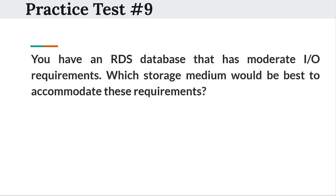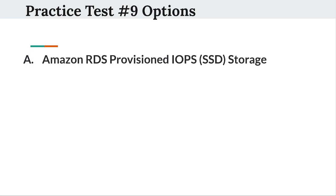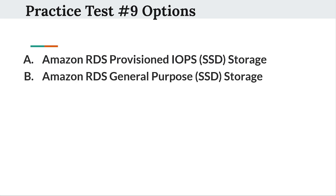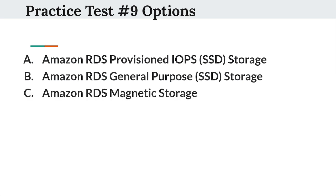So the next question is: You have an RDS database that has moderate I/O requirements. Which storage medium would be best to accommodate these requirements? Option A: Amazon RDS Provisioned IOPS SSD storage. Option B: Amazon RDS General Purpose SSD storage. Option C: Amazon RDS Magnetic storage. Option D: Amazon RDS Cold storage.